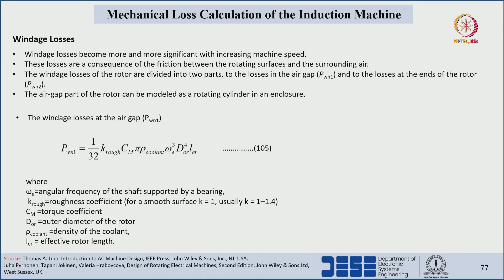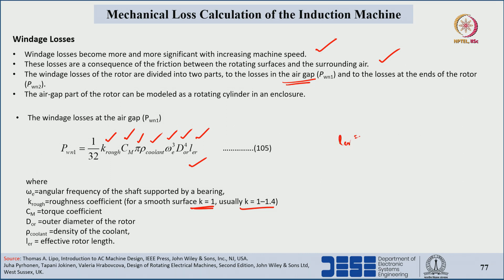The next component is windage losses. Windage losses are more significant at higher speeds — more speed means more friction with respect to the air present inside the machine. These losses are the friction between the rotating surfaces and air. The windage losses with respect to the air gap are given by: (1/32) times the roughness factor — which is 1 for smooth surfaces and 1 to 1.4 for others — times torque coefficient Cm, times pi, times coolant density, times angular frequency of the shaft, times rotor outer diameter to the power 4, times rotor length L_er (considered as L_e when stator and rotor lengths are the same).